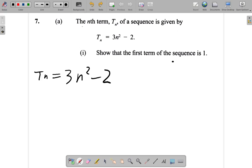The first term would be where n is 1. So in the first term, n is 1; in the second term, n would be 2; in the third term, n would be 3, and so on.